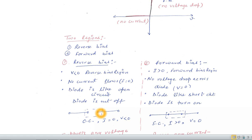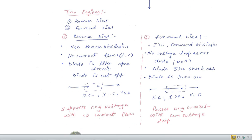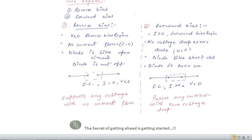So for the reverse bias region it is open circuited and I is equal to 0 and applied voltage V is less than 0. But for the forward bias it behaves like a short circuit. The value of I is greater than 0 and the voltage drop across the diode is 0.